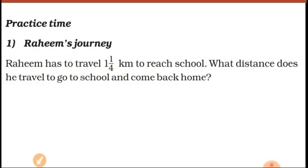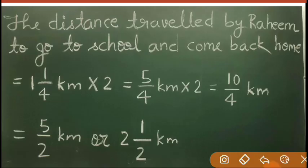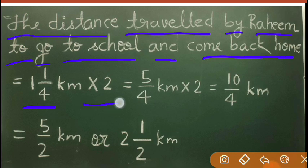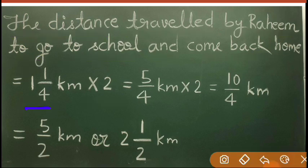Now the third method — note this down in your notebook. The distance traveled by Rahim to go to school and come back home equals 1 and 1 upon 4 km multiplied by 2, because he goes and comes back. Change the mixed fraction to improper: 4 times 1 plus 1 gives 5 upon 4 km, into 2. Multiply 5 by 2 to get 10 upon 4 km.